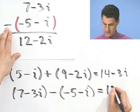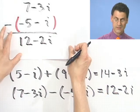And so this would be 12 minus 2i. Adding and subtracting complex numbers, just add the real parts, add the imaginary parts, or subtract the real parts, subtract the imaginary parts. Not a big deal.